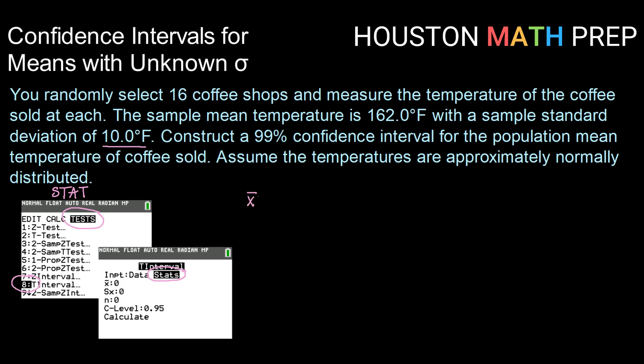It's going to ask us for x bar or our sample mean, which in this problem is 162. It's going to ask us for our sample standard deviation, which is 10. It's going to ask us for the number in our sample. Here we surveyed 16 coffee shops. And then it's going to ask for our confidence level, which we place in as a decimal. In this case, that would be 0.99.